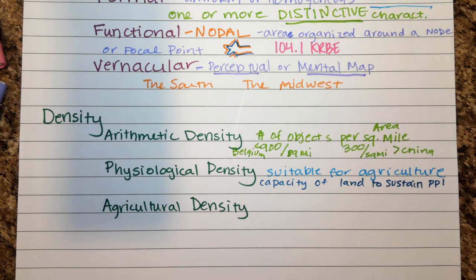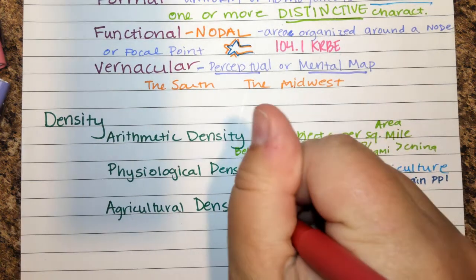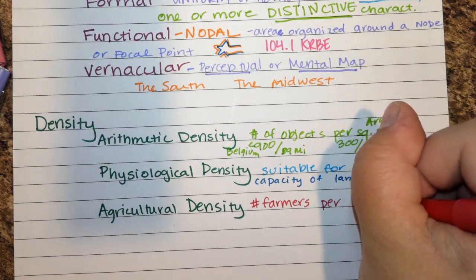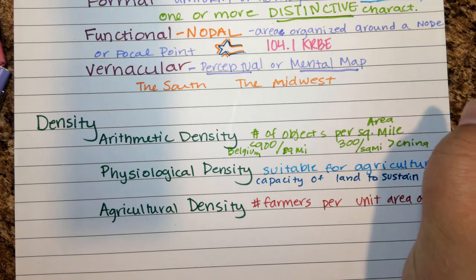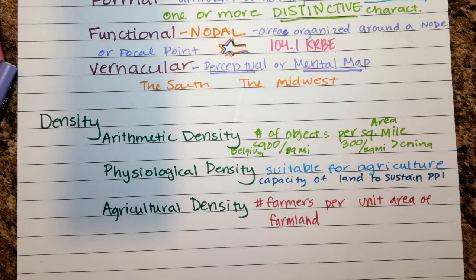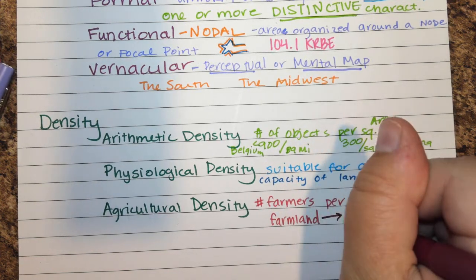Agricultural density is the number of farmers per unit area of farmland. Having farmers means your people are getting food; however, if your land is all taken over by farmland, you don't have much room for development. Less developed countries tend to have a more agriculture-based economy, so agricultural density is often used to measure how developed a country is.